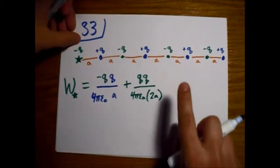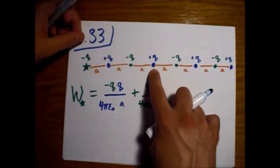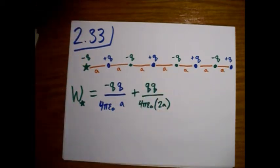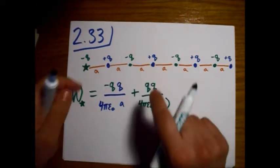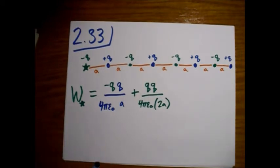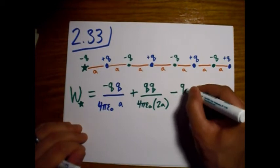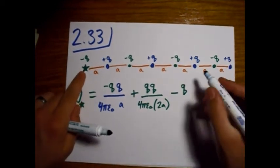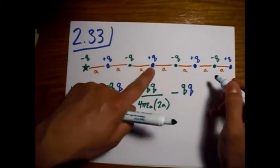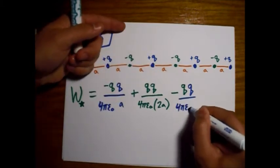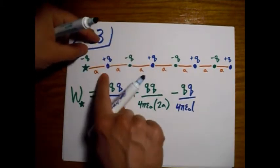And then, now we have another blue one right here interacting with this particle. And the signs are opposite again, so we'll get a minus sign. We have the green charge here and the blue charge here. 4πε₀, but now the distance is 1, 2, 3a.